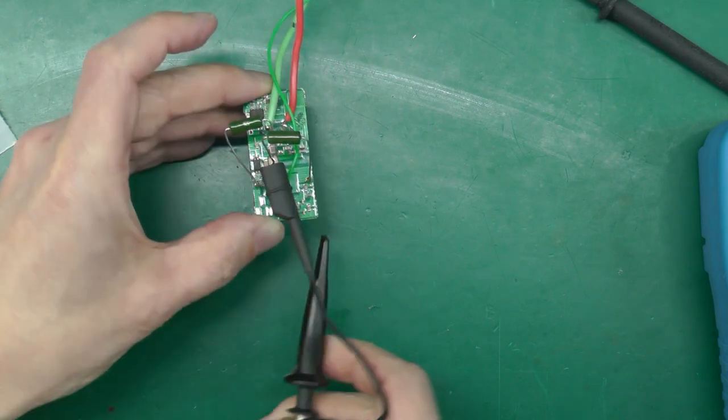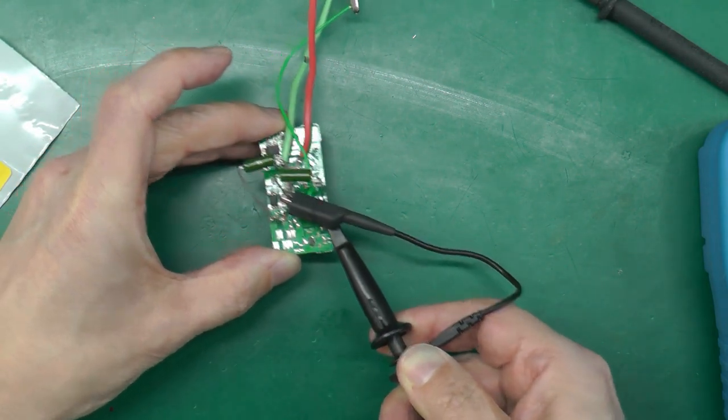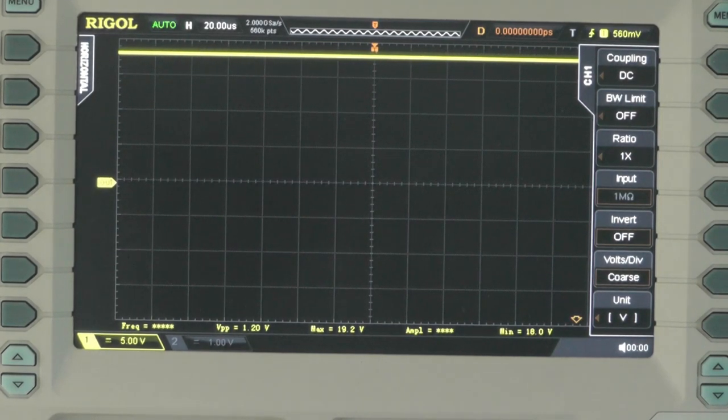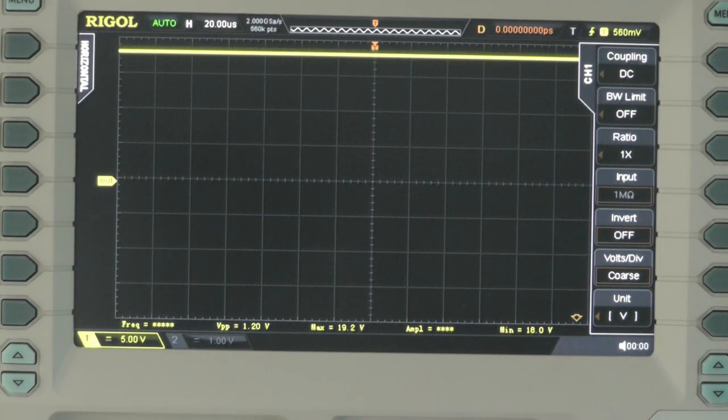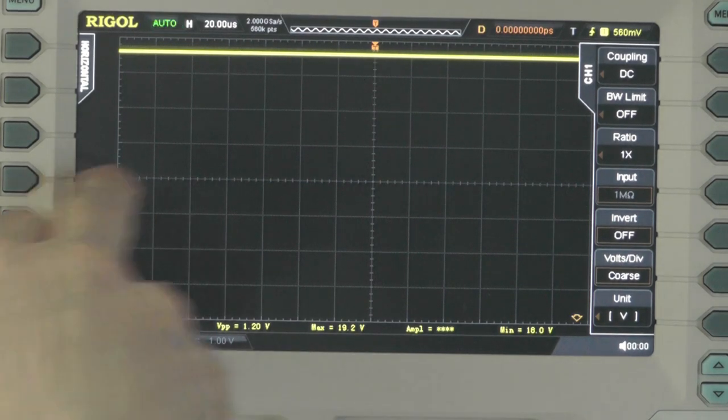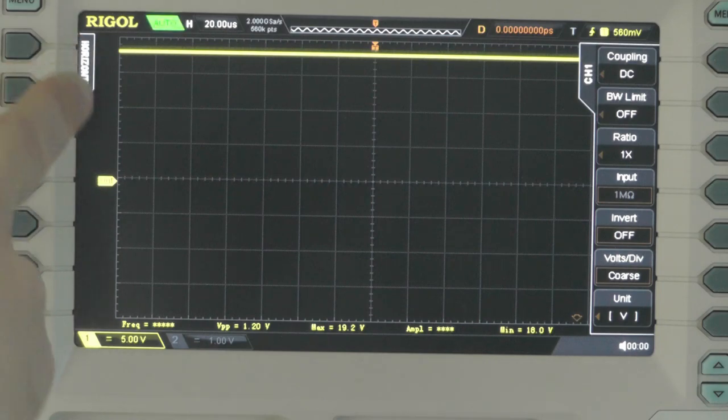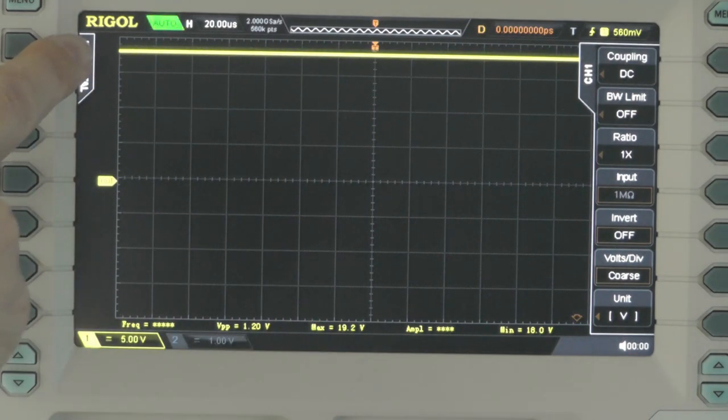That's the scope hooked up. It's been on for about five or ten minutes now. I'm on DC coupling, center zero volts, five volts per division, so you can see I'm around about the 18 volts there, and there's a little bit of noise going on.